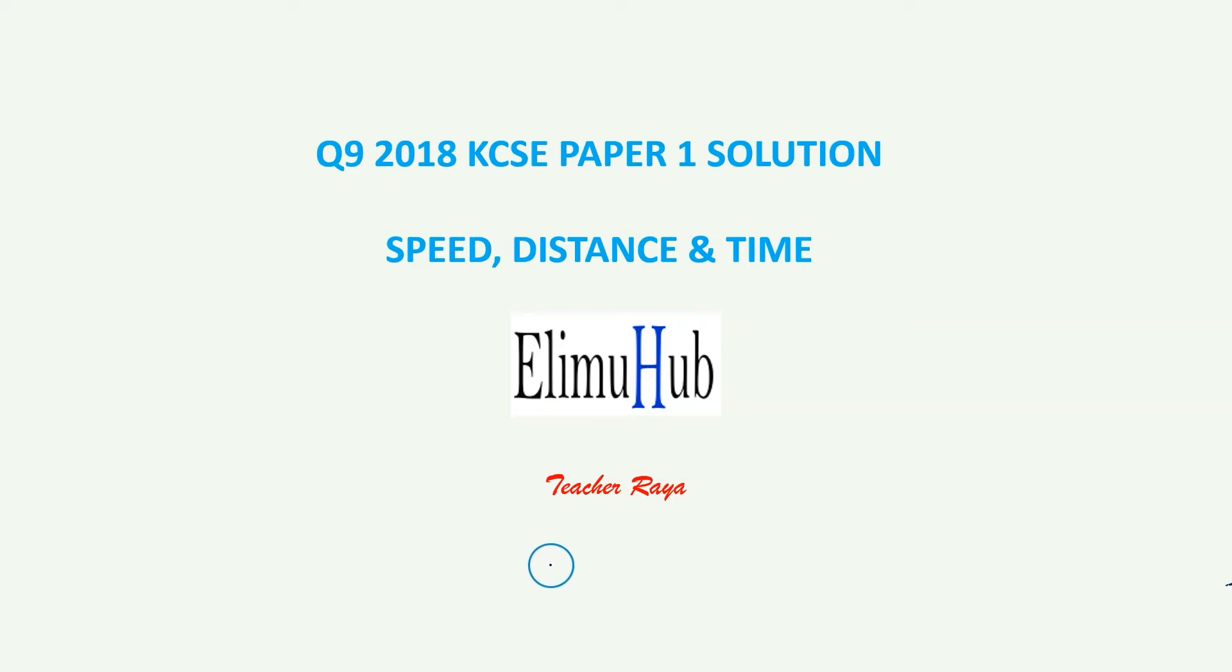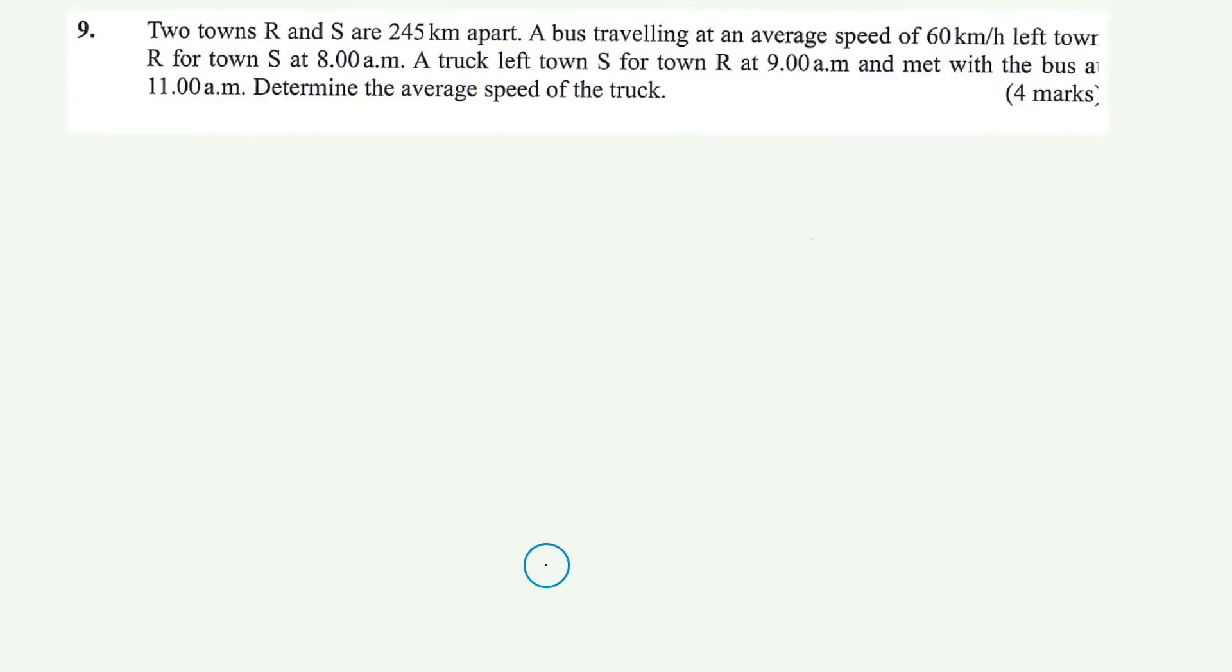Hi, welcome to this tutorial. This is a solution to question 9 from KCSE 2018 past math paper 1. And the topic for this particular question is speed, distance and time.